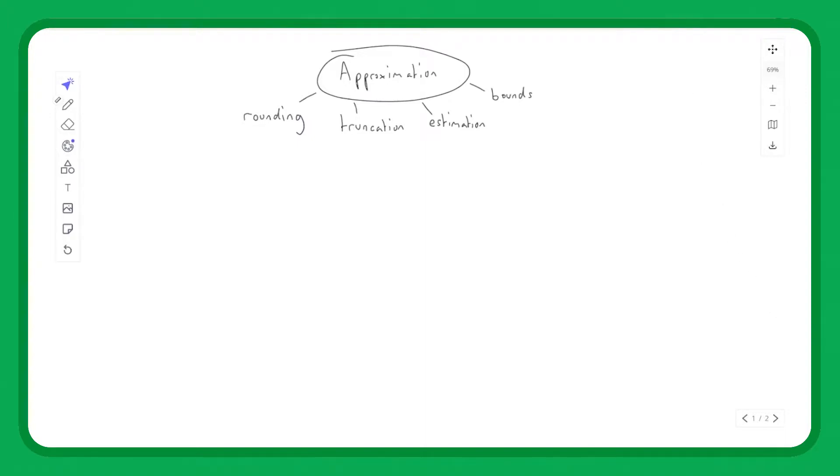Approximation can actually be broken down into four subtopics: rounding, truncation, estimation, and bounds. I'll do a brief intro to each of these subtopics and then we'll go through one or two exam questions for each.